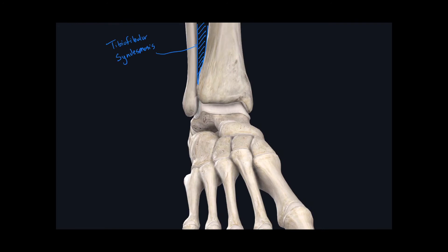The joint located between the inferior articular surface of the tibia and the trochlea of the talus is called the talocrural joint, also known as the ankle joint. The classification for this joint is a hinge joint.